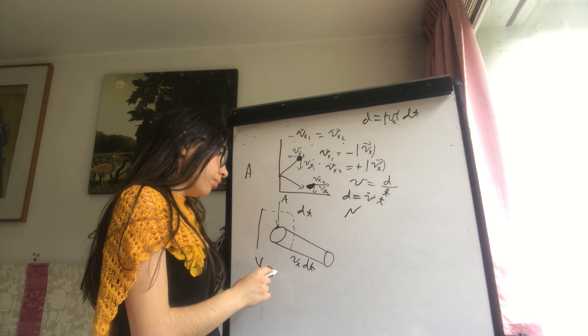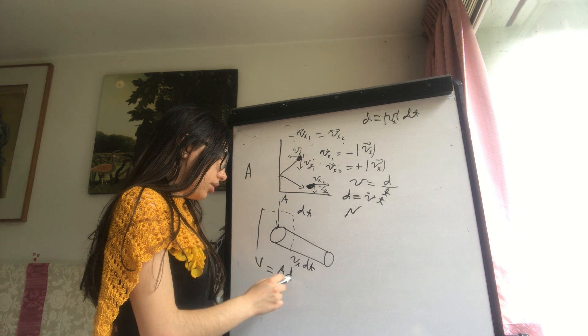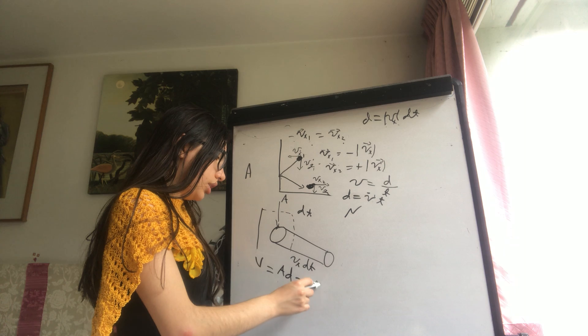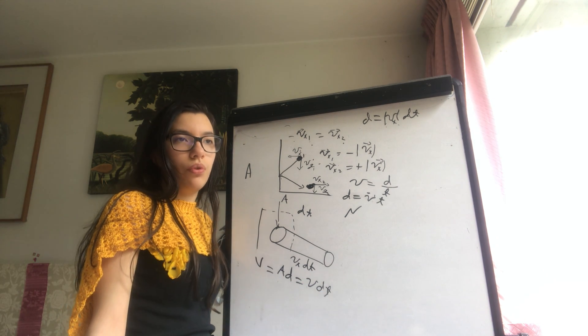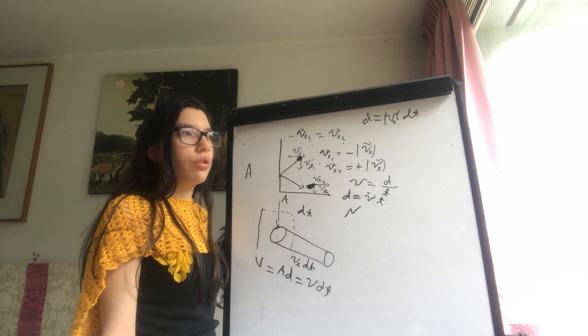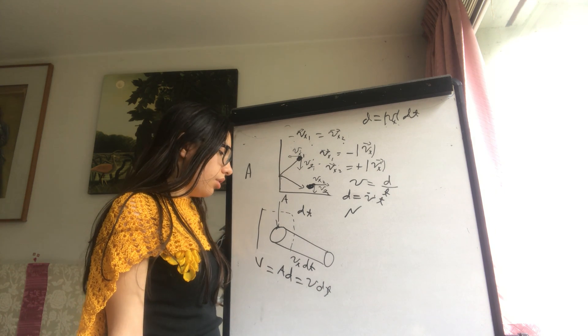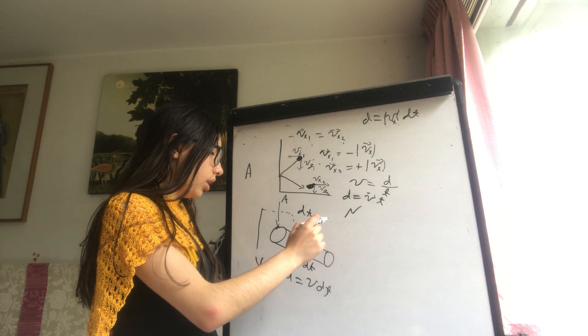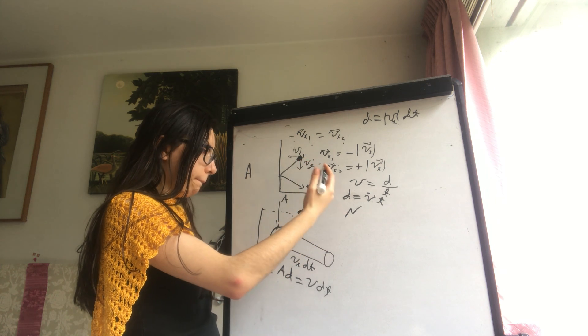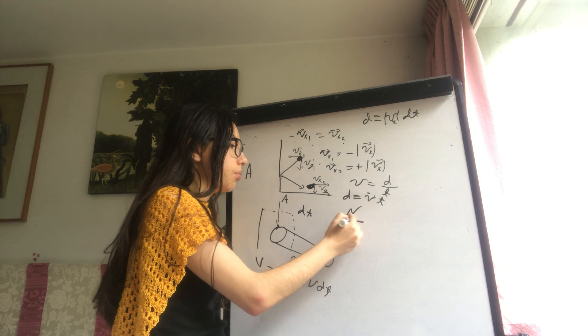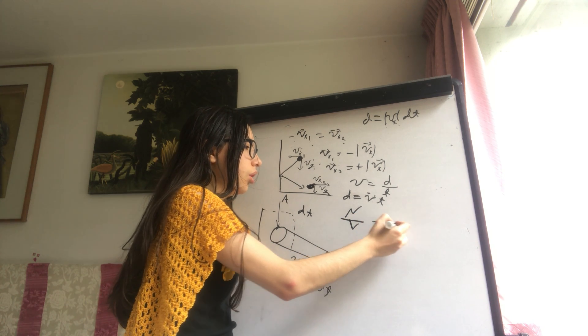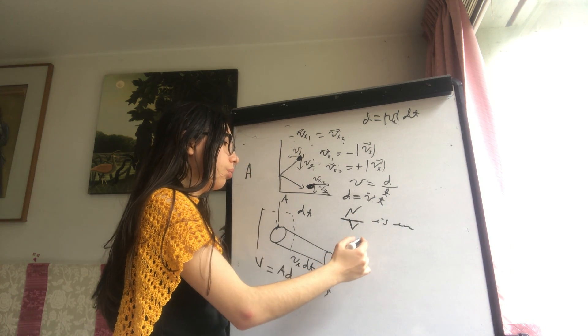The distance is velocity times time, because this is the continuity equation for fluids. Let's say that the number of molecules per volume is uniform, so N over V is uniform.